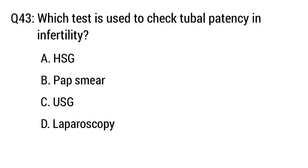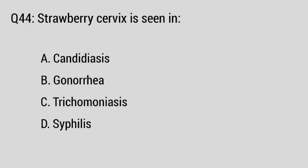Question number 43. Which test is used to check tubal patency in infertility? The right option is option A: HSG (Hysterosalpingography).